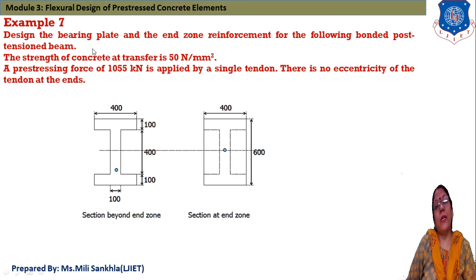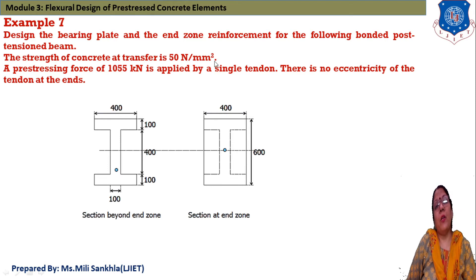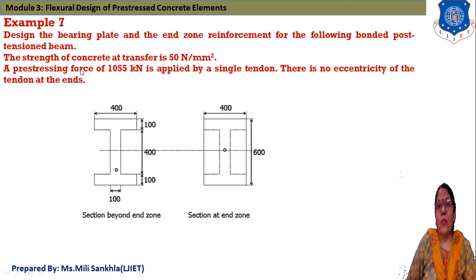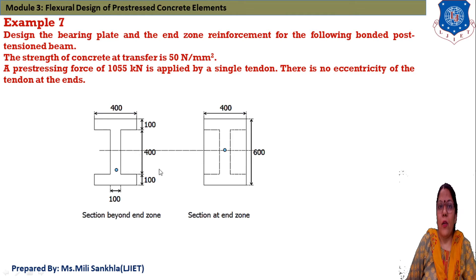We are discussing an example of a post-tensioned beam. The strength of concrete at transfer is 50 Newton per mm square — that is our fci. A prestressing force of 1055 kN is applied by a single tendon, denoted as PK. There is no eccentricity of the tendon at the end.